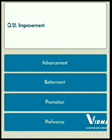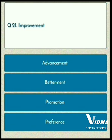Hi friends, welcome to English Guru YouTube channel. Now I am going to explain some synonyms. Let's talk over the synonyms — which is the synonym of improvement? Four options are given, we have to pick out the correct one: advancement, betterment, promotion, forens. The correct answer is betterment.